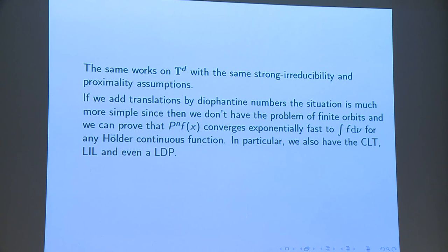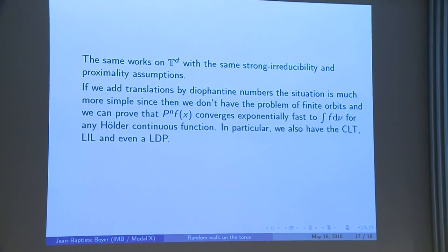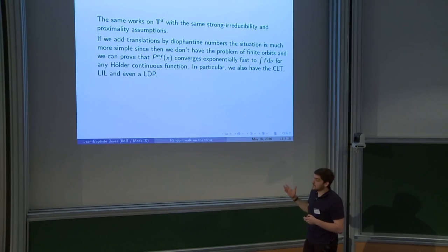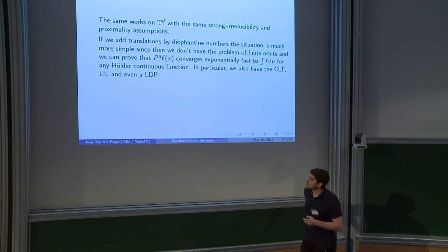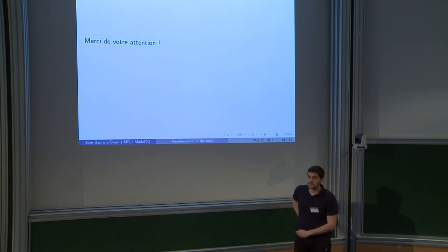And so to conclude, the same works in d dimensions. And I can also add translations by irrational numbers to avoid finite orbits like the point zero. If I add a translation, it's okay. And I still have a large deviation principle and law of the iterated logarithm. So, thank you for your attention.